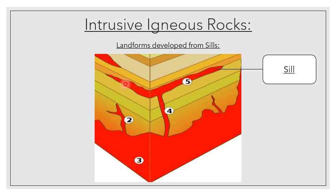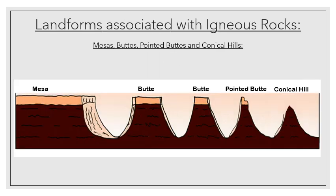What happens is these top sedimentary layers are completely eroded. Below the sill, we still have a sedimentary layer. The sill extends quite far — for kilometers and kilometers — but it does end somewhere, so we've got a sedimentary edge. My sill eventually cools down, solidifies and crystallizes. Because it's quite close to the surface of the earth, it commonly forms dolerite or basalt. It can end up forming a mesa, buttes, pointed buttes, and even conical hills.